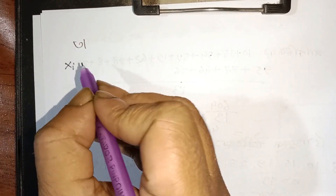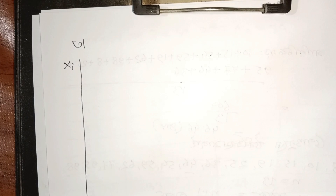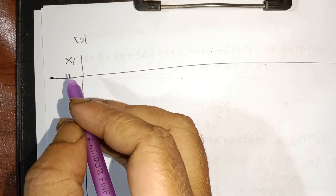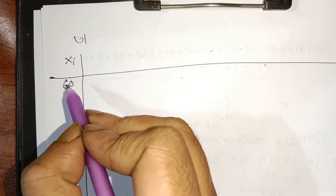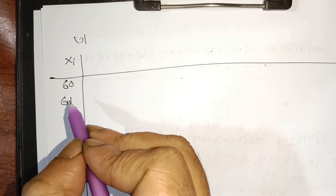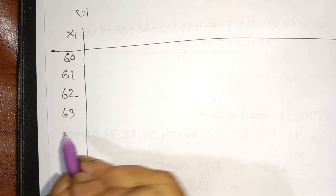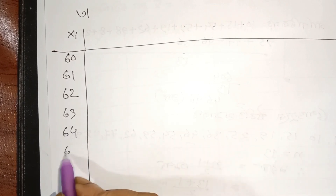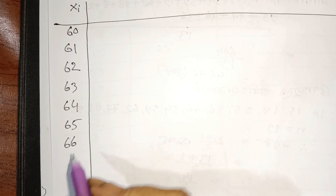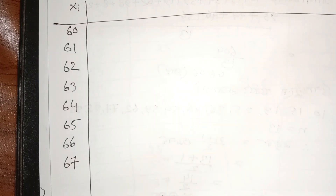Now we need to do two of them. The solution is x, and x is a type. The solution is x, and x is such. The series is 60, 61, 62, 63, 64, 65, 66, and 67.